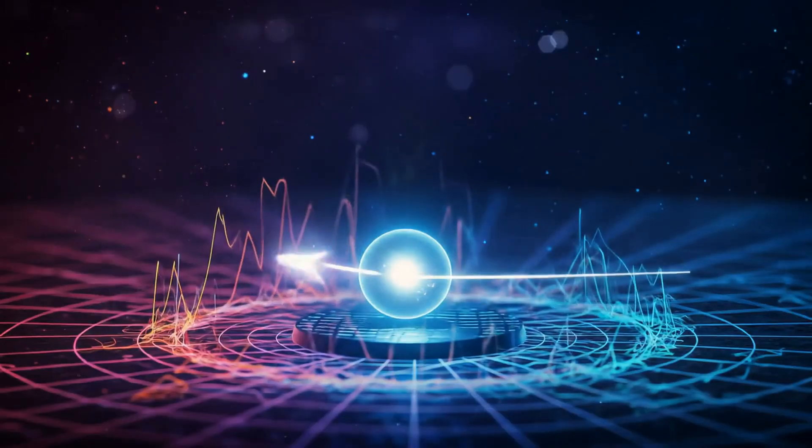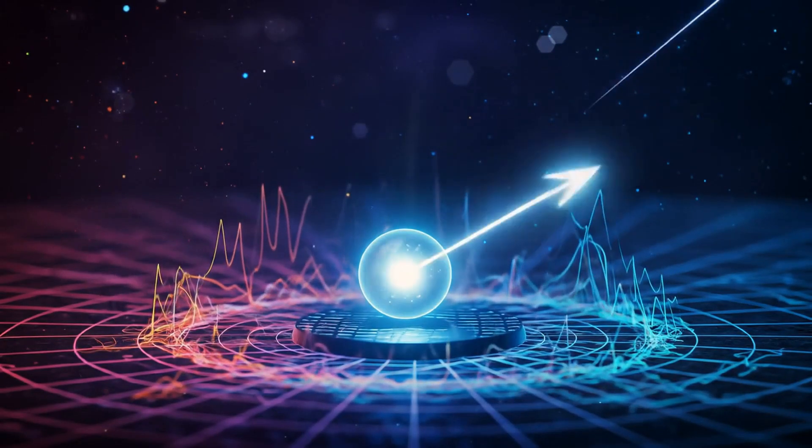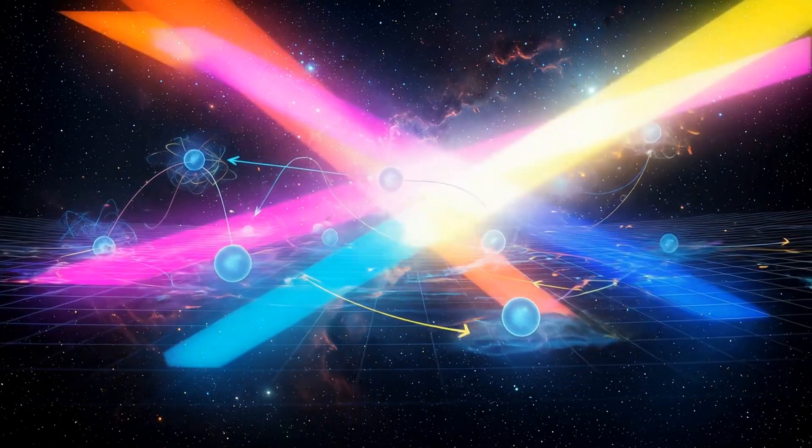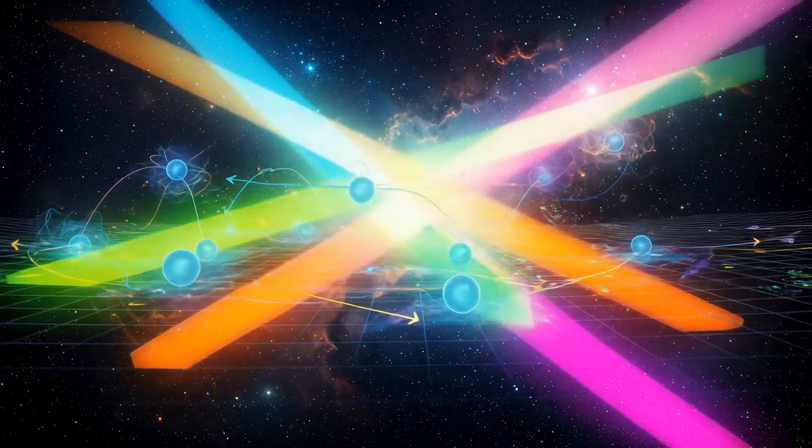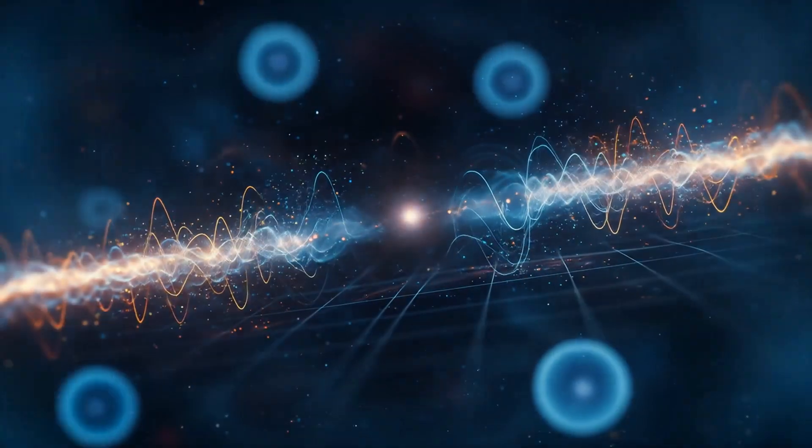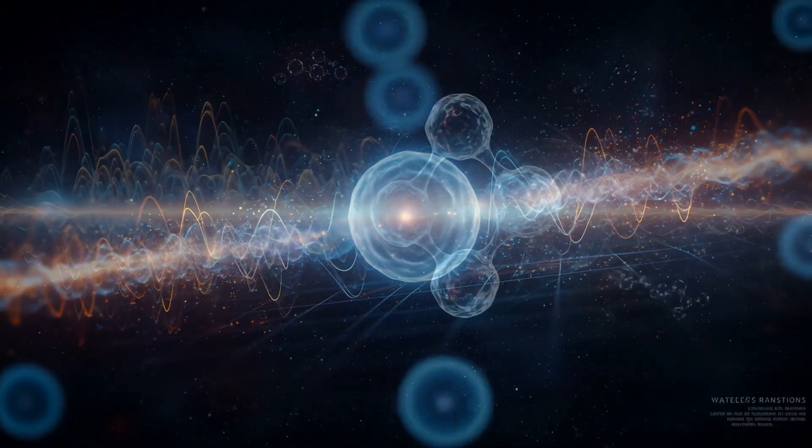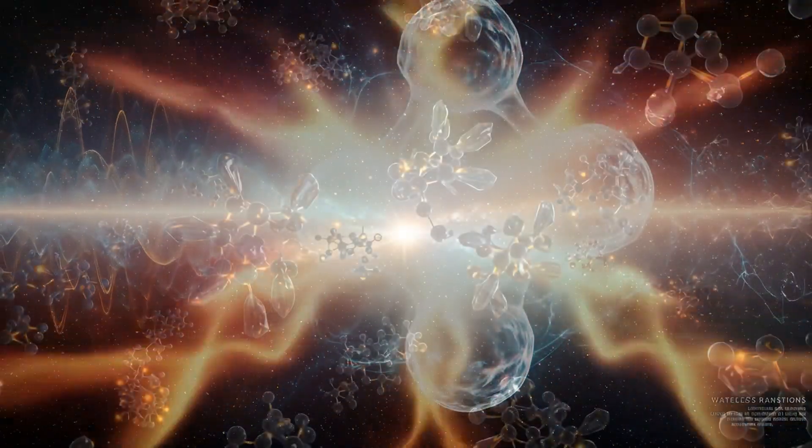Each electron is a spinning vector encoded on a qubit, a tiny sphere of memory. Its orientation, its slope, determines its probability to exist here or there. When many of these slopes align, they interfere constructively or destructively, forming what you call reality.